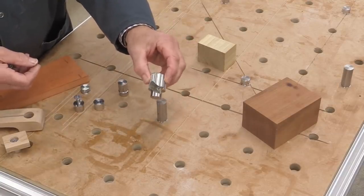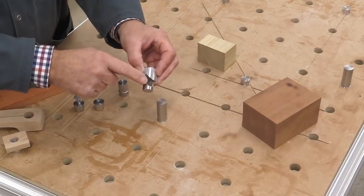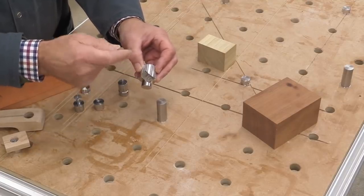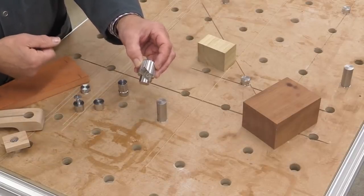So that's the chamfer tool. And you've got a cutter here, which has got four edges, and if one edge gets dull, you can rotate it, and you've got another fresh face. So there are four faces all together.